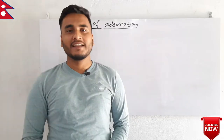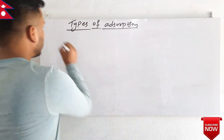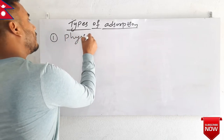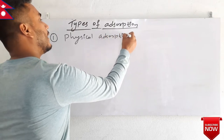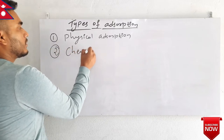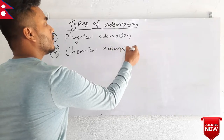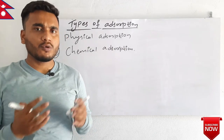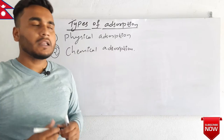There are two types of adsorption: the first one is physical adsorption, and the second one is chemical adsorption. Let's see what actually happens in case of physical adsorption first.